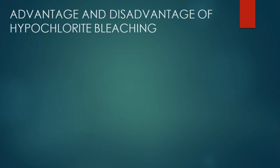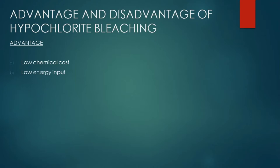What are the advantages and disadvantages of the hypochlorite bleaching process? The advantages are: low chemical cost — the cost of bleaching powder is very cheap in the market. Next, low energy input — we carry out the bleaching process at room temperature, so we don't need any extra energy. And low cost of equipment.